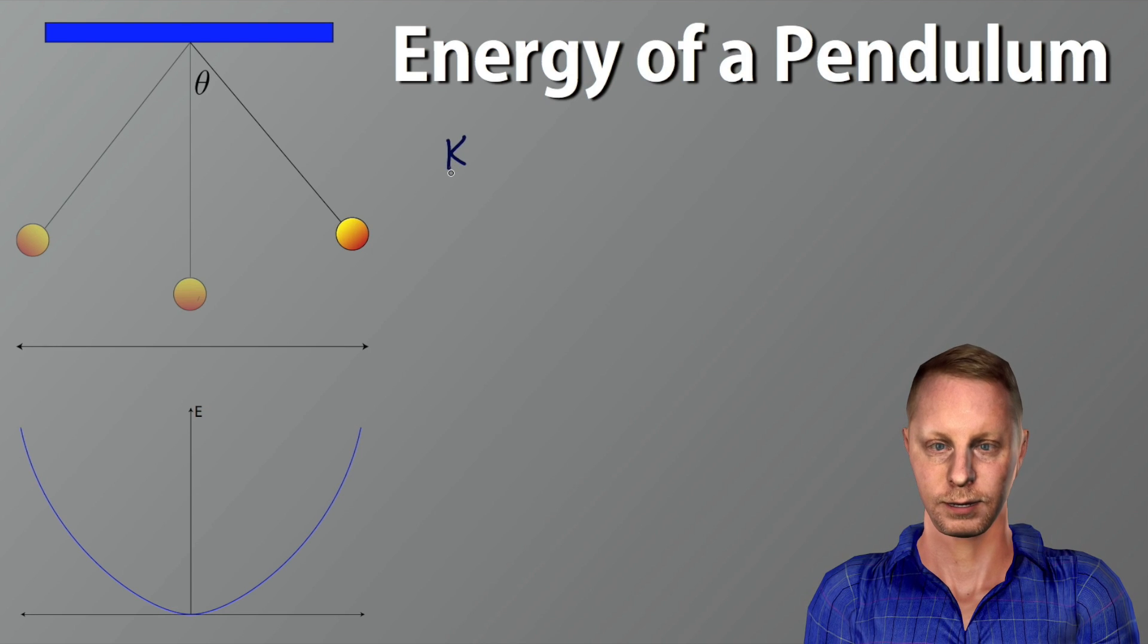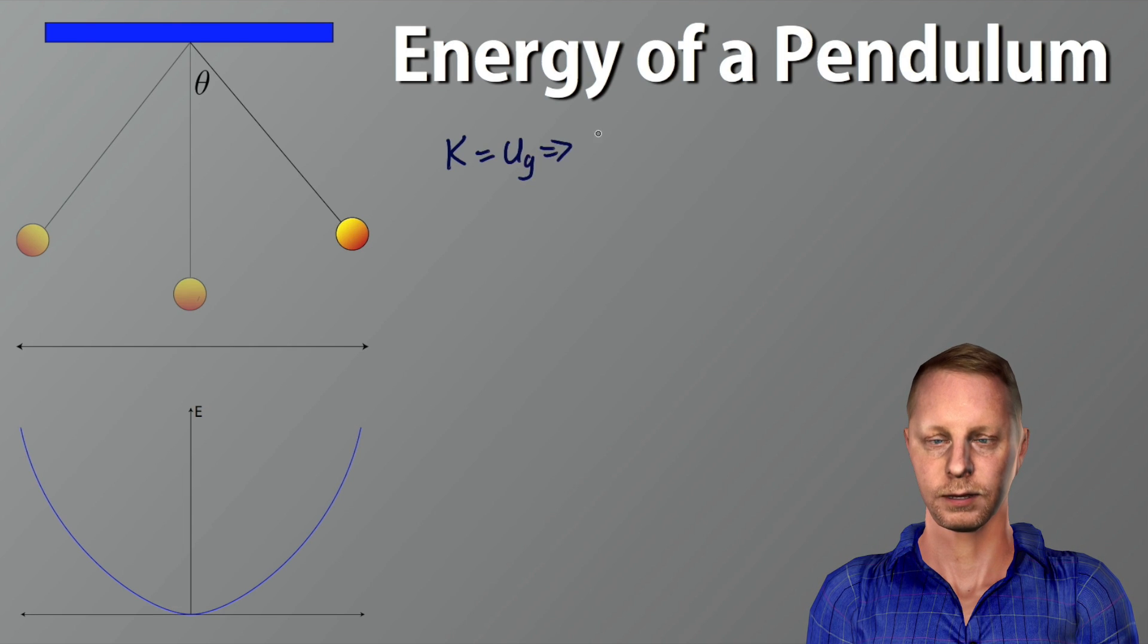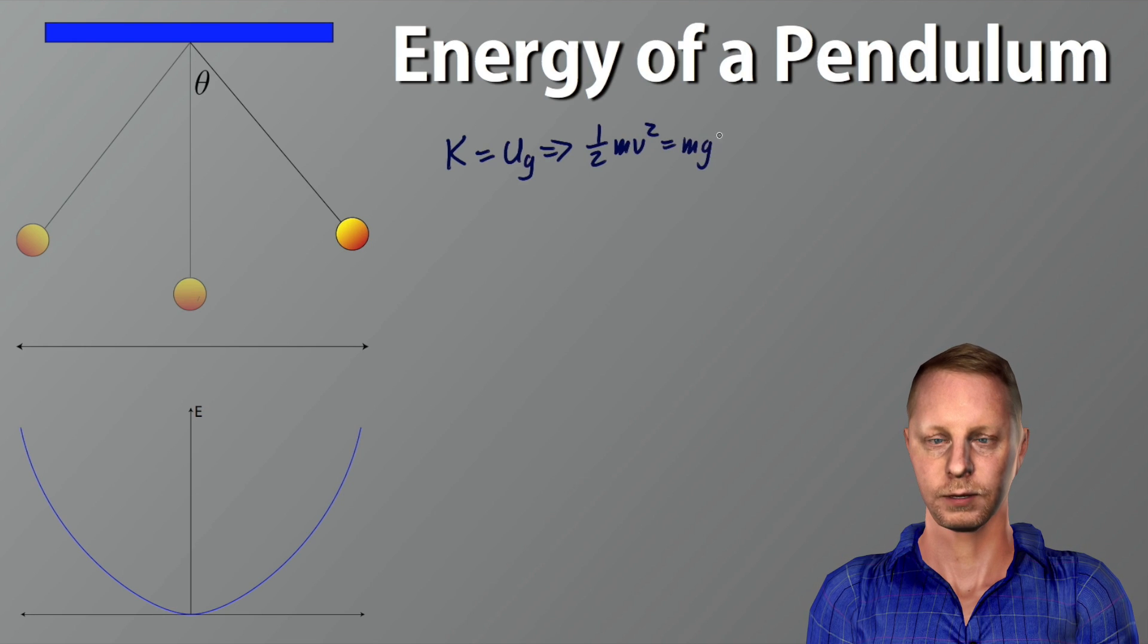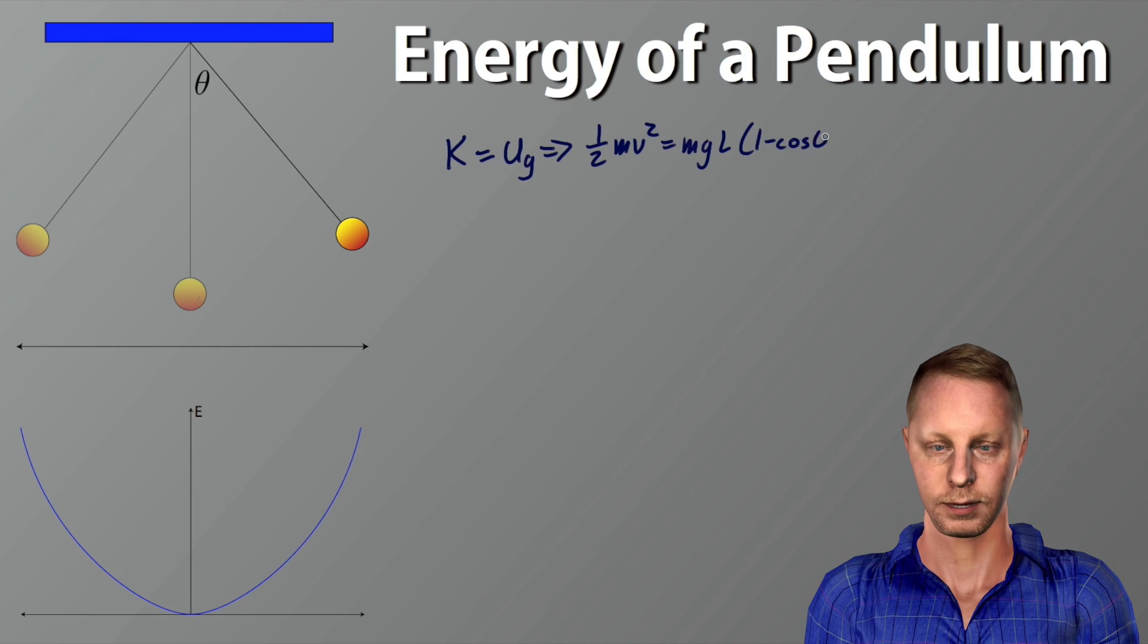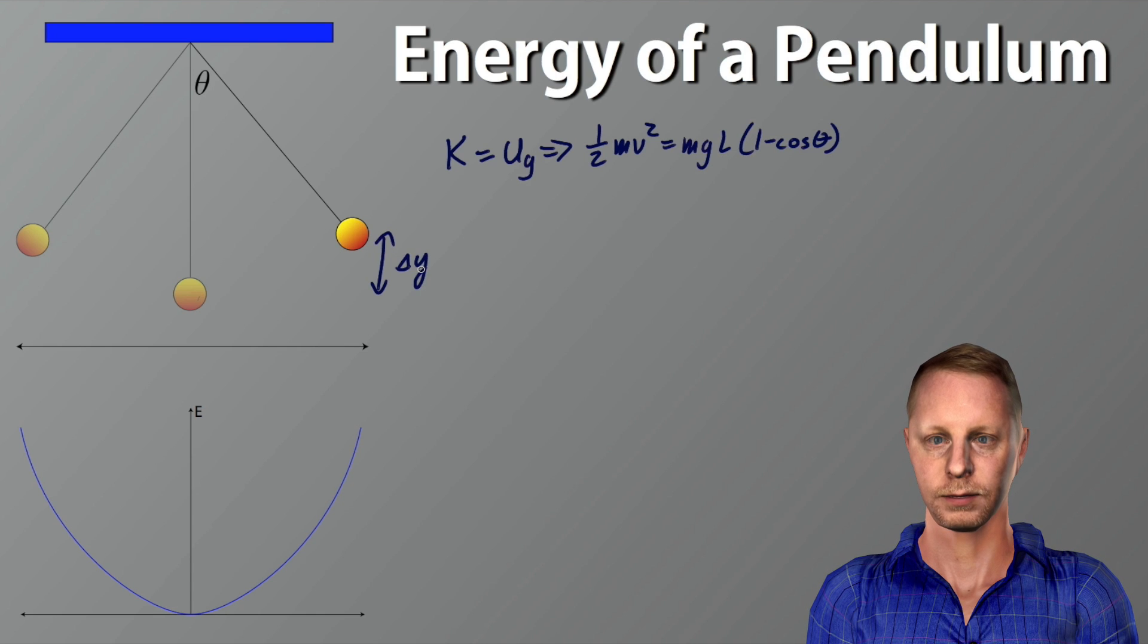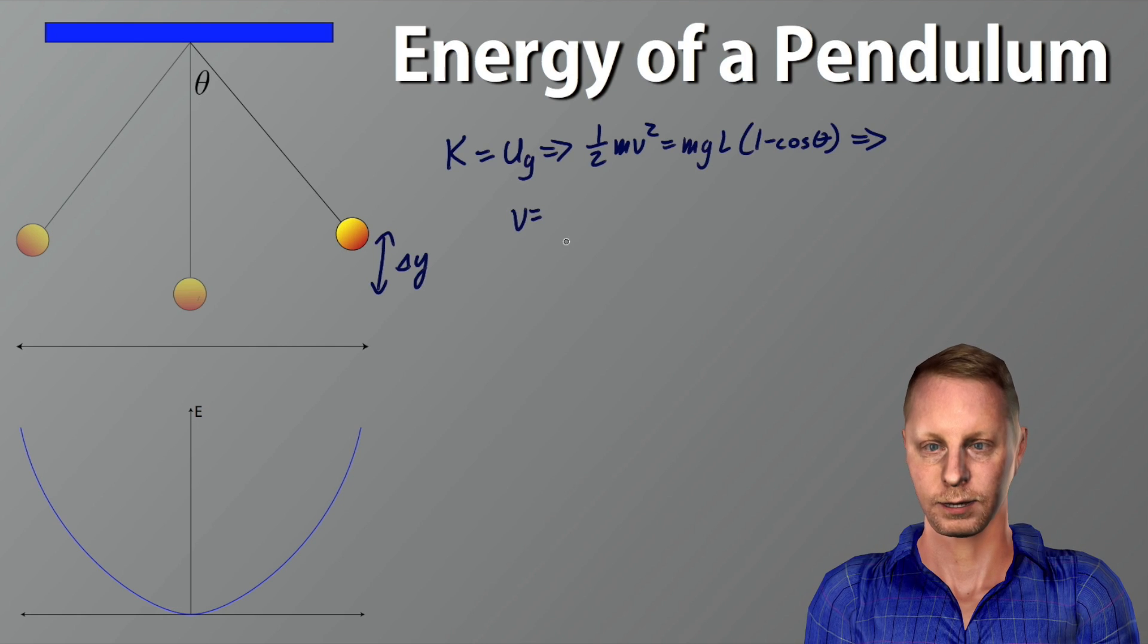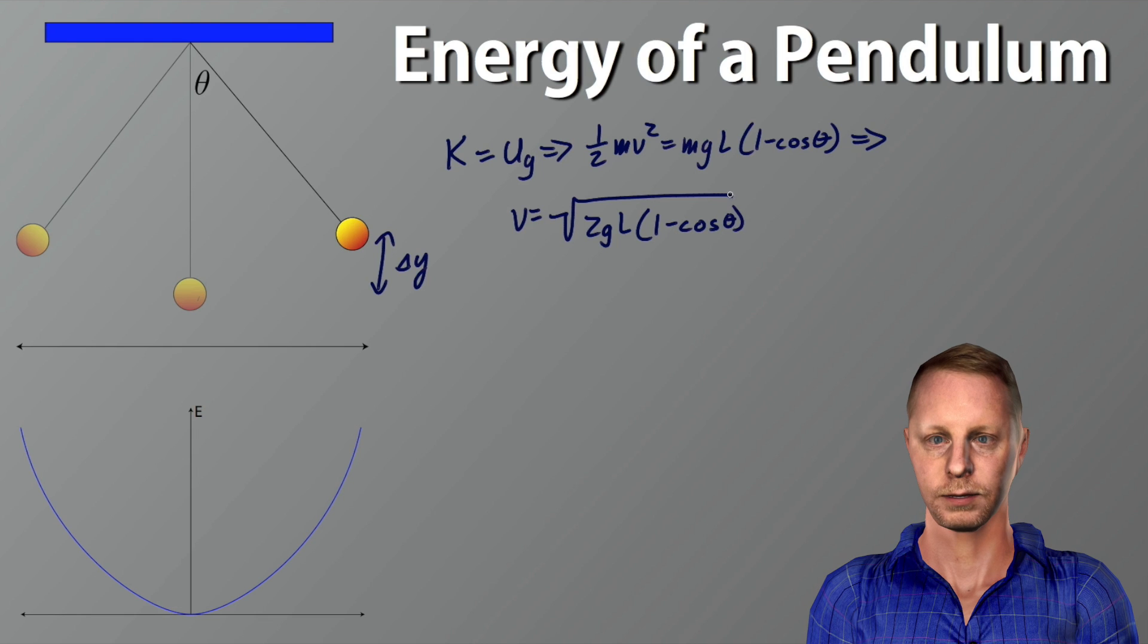We could say the kinetic energy, the maximum kinetic energy, when it's down at the lowest point, must be equal to the gravitational potential energy when it's at its highest point. Or the kinetic energy, one half mv squared, must equal mgl times one minus the cosine of theta, where l one minus the cosine of theta is actually this delta y amount right here. A little bit of algebraic rearrangement we can solve for v to find that v, the velocity at the lowest point, the maximum velocity is going to be the square root of 2gl times the quantity one minus the cosine of theta.